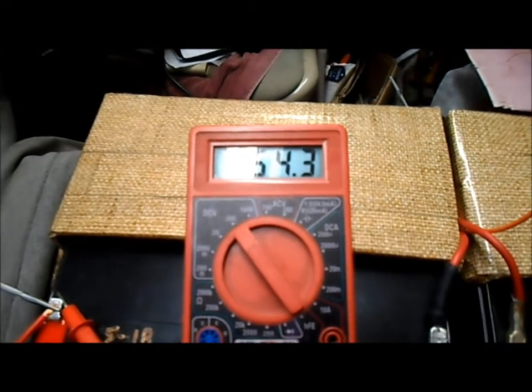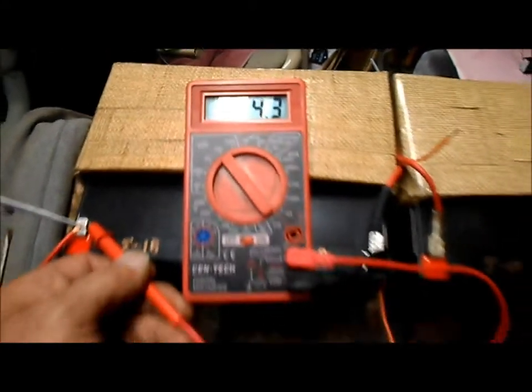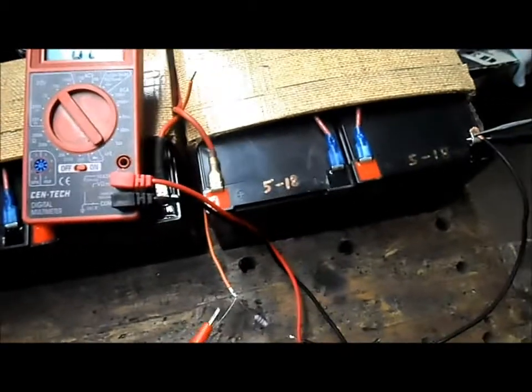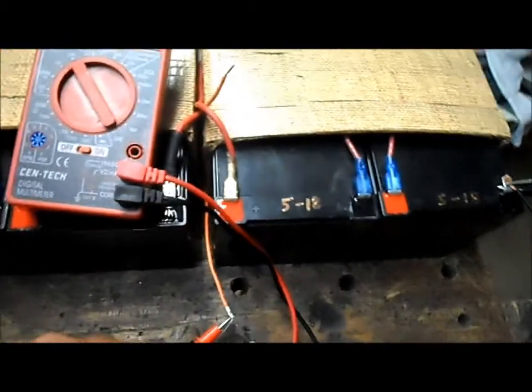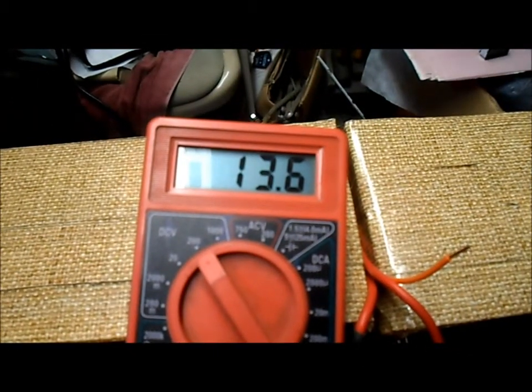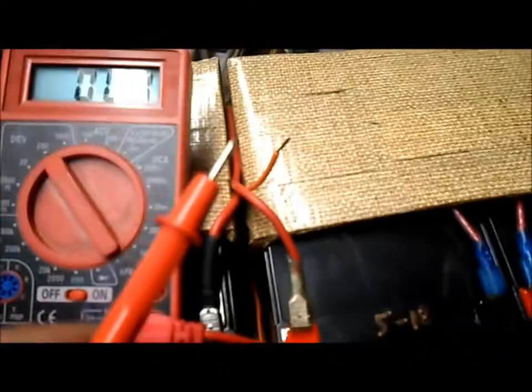Our meter showing 54.3 volts. Double-check again, checking at our junction: 13.6 volts. And even our orange wire coming out, we'll check at that: 13.6 volts. Wonderful.